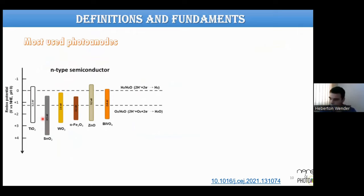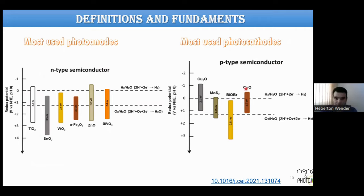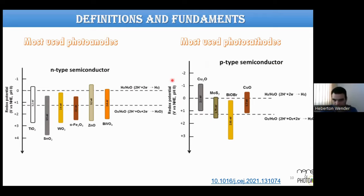The most used photoanodes are n-type semiconductors because band bending facilitates holes reaching the surface for oxidation reactions. Similarly, p-type semiconductors are desired at the cathodic side. The most used n-type materials are titanium oxide, tungsten oxide, iron oxide, and bismuth vanadate. For p-type semiconductors, only a few materials work well, and the most commonly used are copper oxide-based ones.